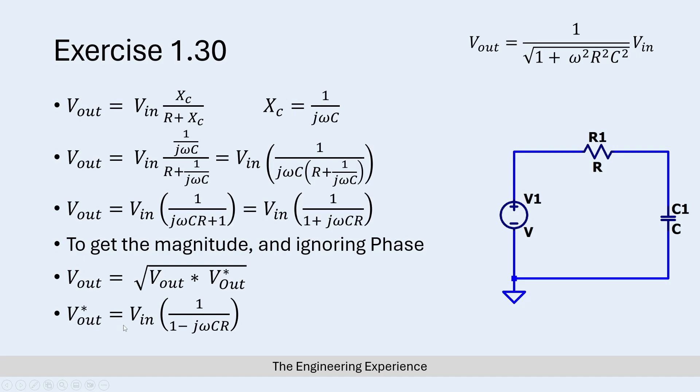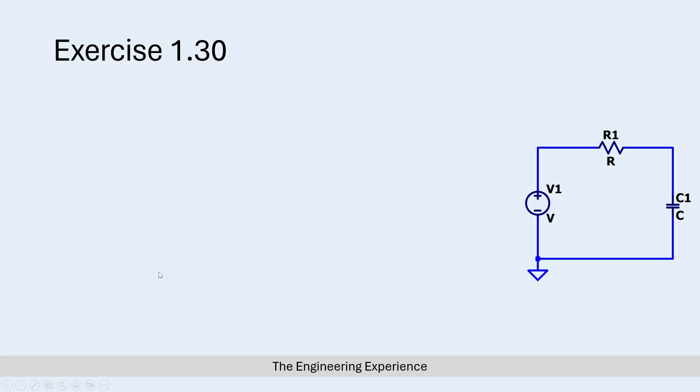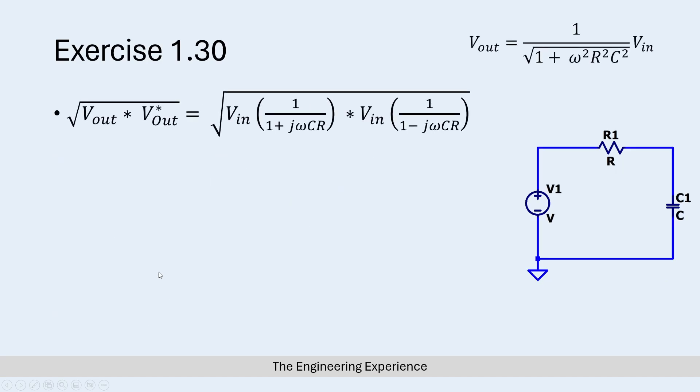So we get the complex conjugate of V_out equals V_in in brackets, 1 over 1 minus jωCR. What I will be doing is plugging this equation into here and this equation into here.